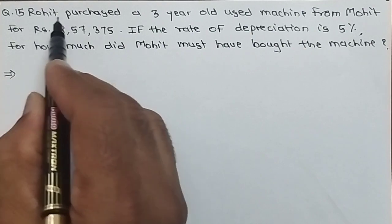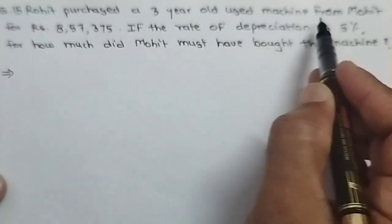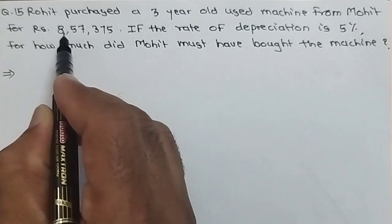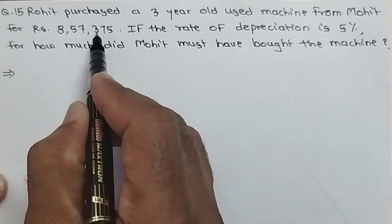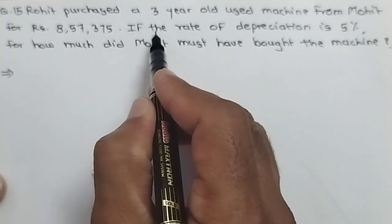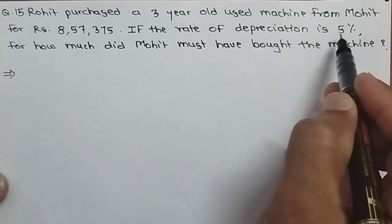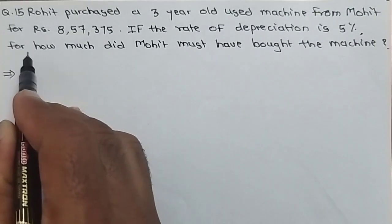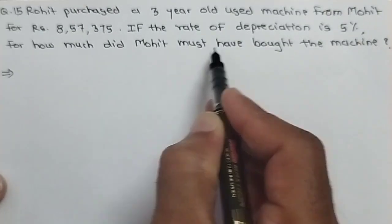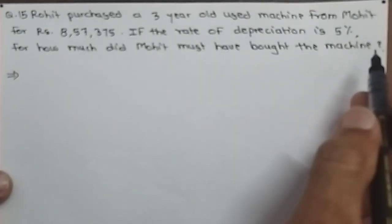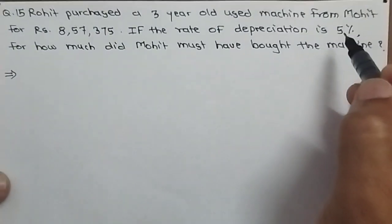Question is given: Rohit purchased a 3 year old used machine from Mohit for Rs. 857,375. If the rate of depreciation is 5%, how much did Mohit must have bought the machine? Here rate of depreciation is given, that is 5%.